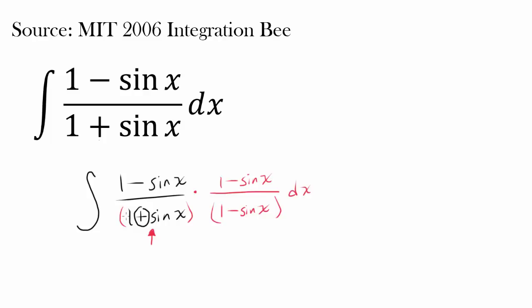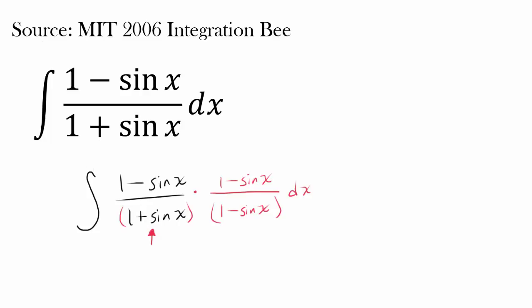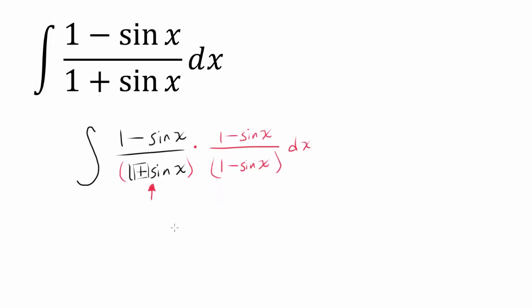Think of it this way — instead of (1 plus sine of x), if we had just sine of x, you could do 1 over sine of x minus sine of x over sine of x, and evaluating that integral would be pretty easy. But since you have the plus, you have two elements instead of one, making the fraction messier. So by multiplying by (1 minus sine of x), we can get rid of that plus sine.